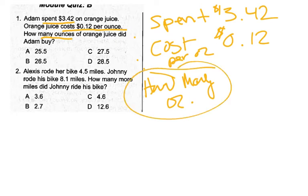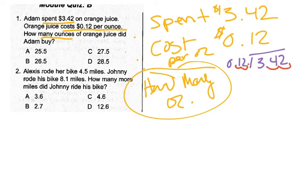In order to figure that out, we are going to take our $3.42 and divide that by the $0.12 it costs per ounce. Because I have a decimal in my divisor, I need to move that so it looks like a whole number, and then I need to move in my dividend the same number of places. So my new problem is $342.0 divided by 12.